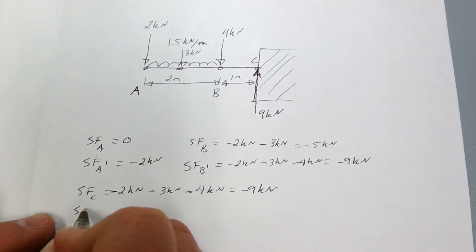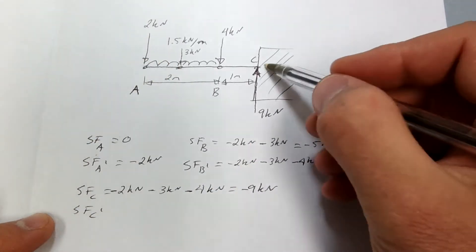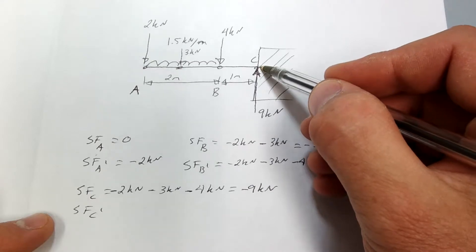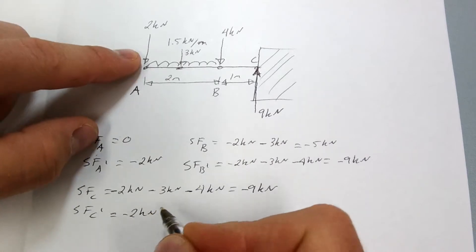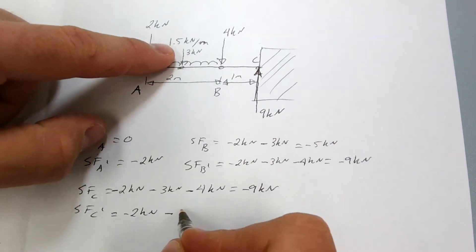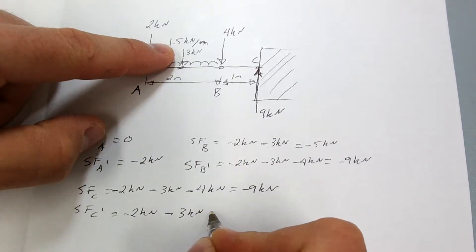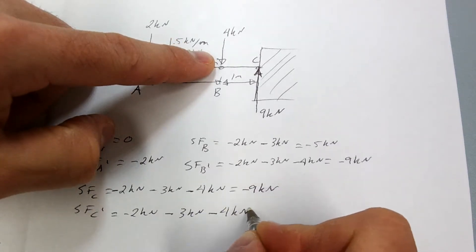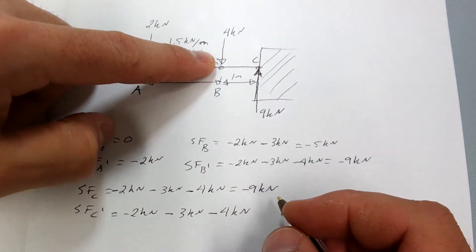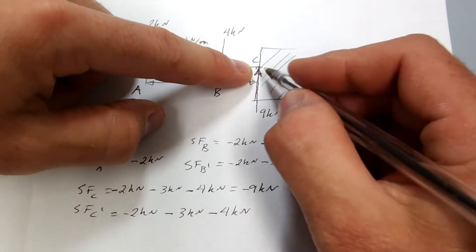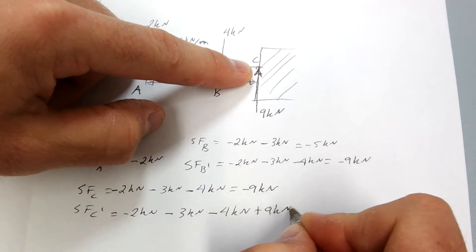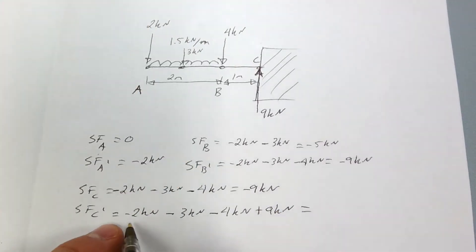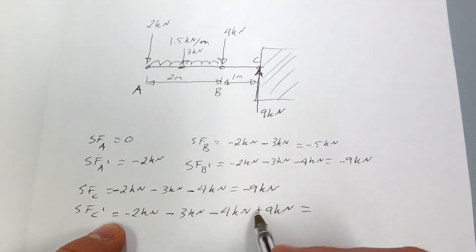At point C prime, just to the right of point C: negative 2 kilonewtons, another negative 3 kilonewtons from the uniformly distributed load, another negative 4 kilonewtons at point B, and then because it's just to the right of point C, you add a positive 9 kilonewtons. So negative 9 plus 9 equals 0.